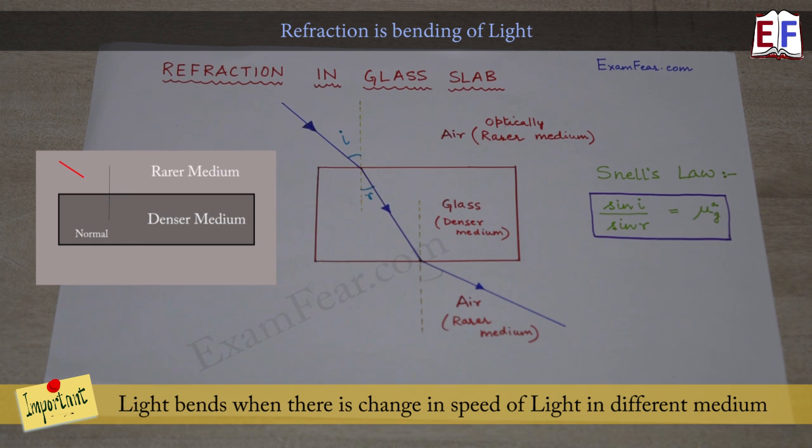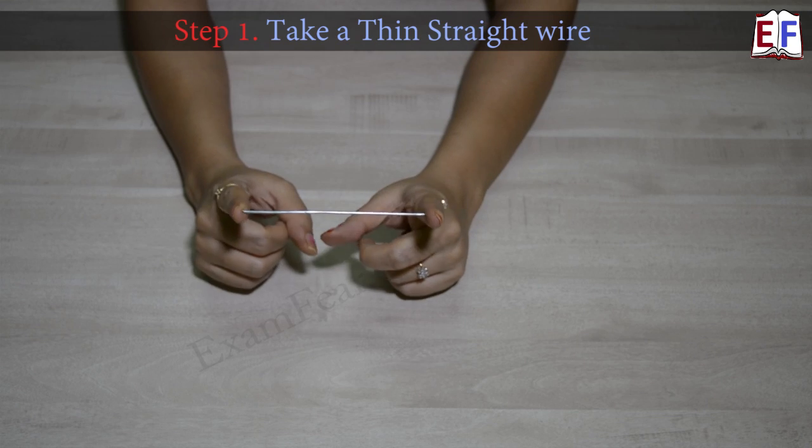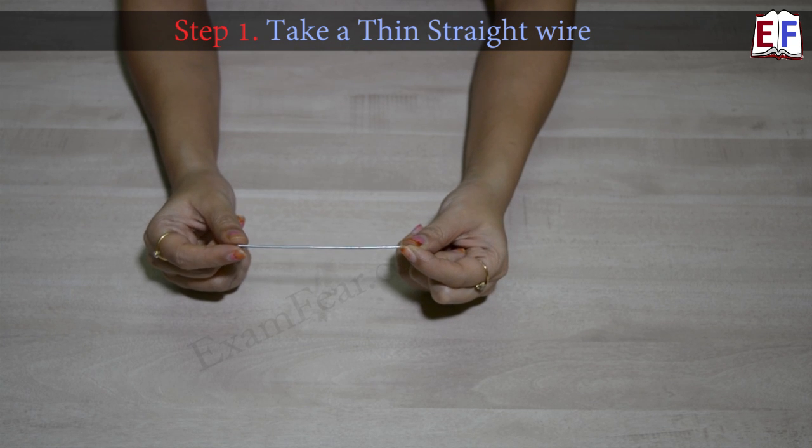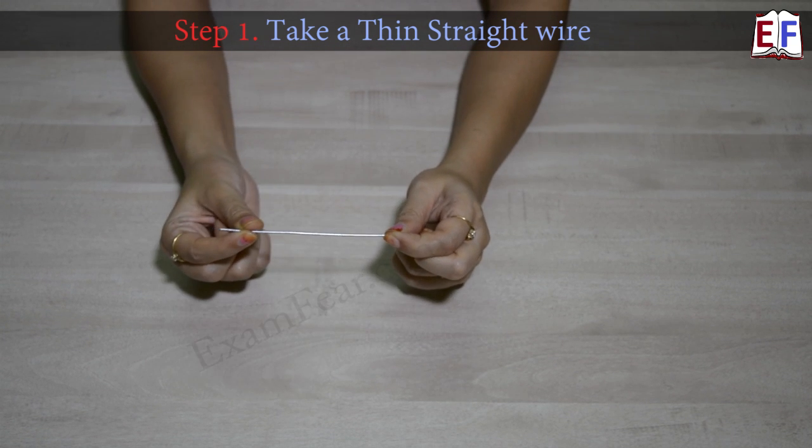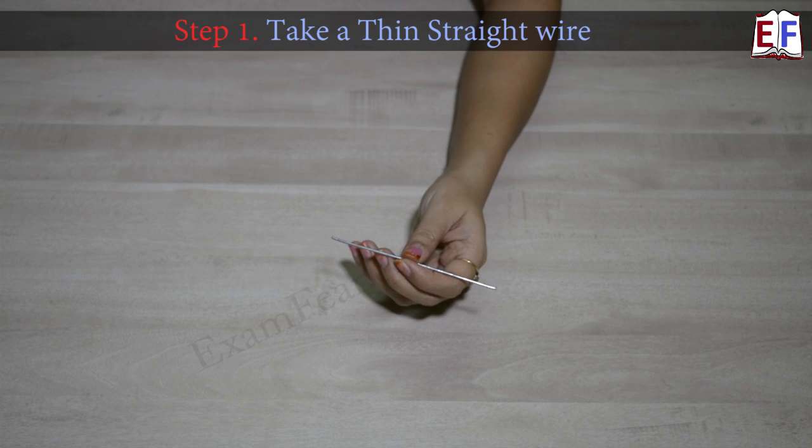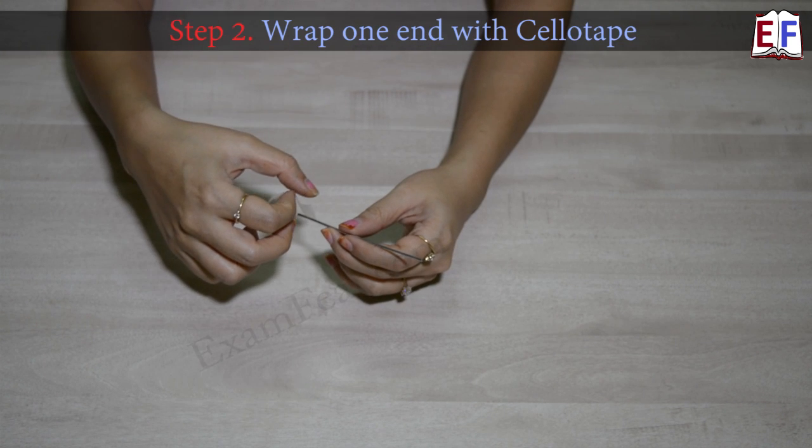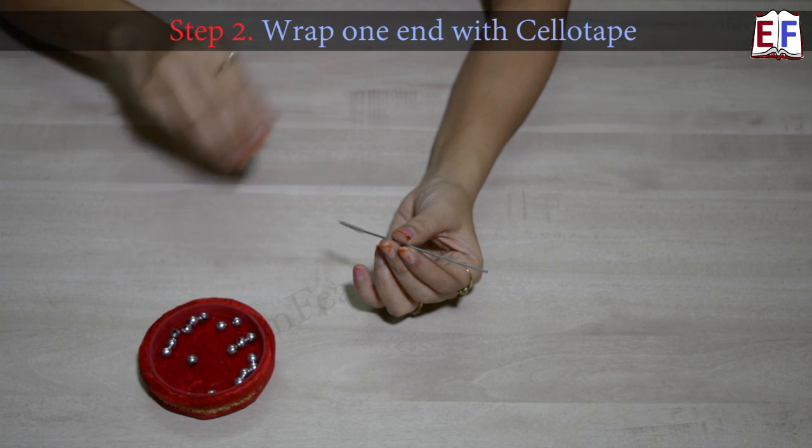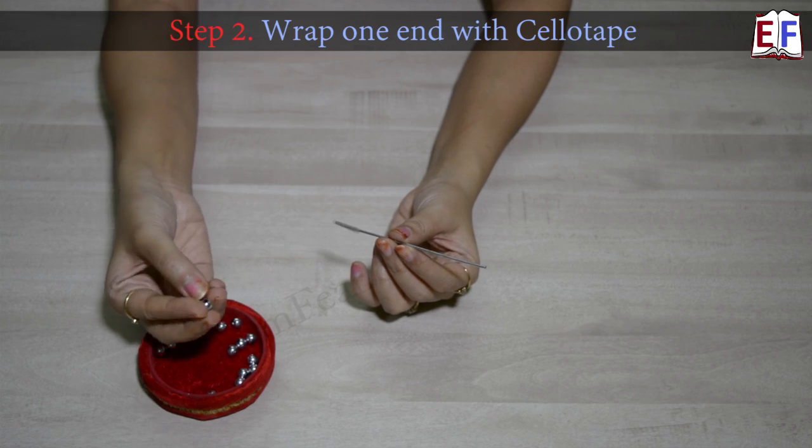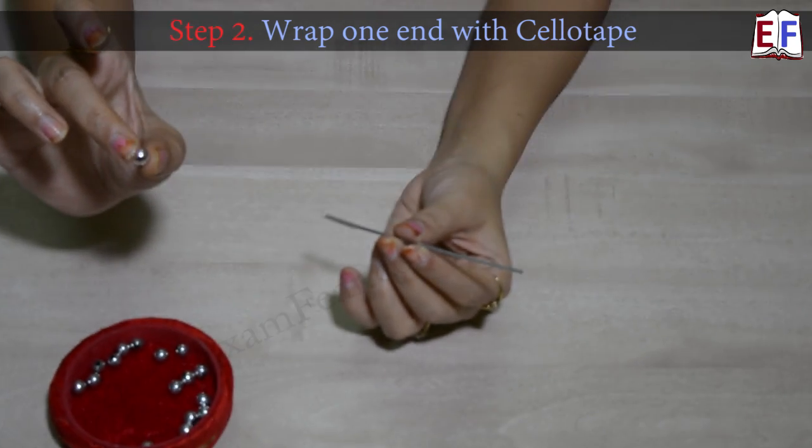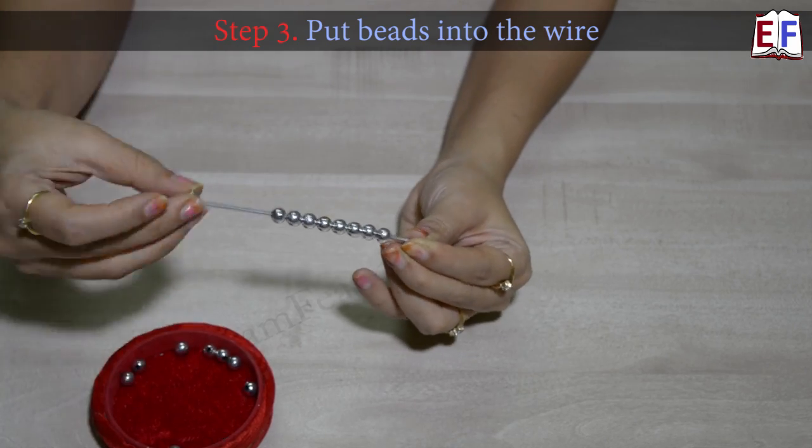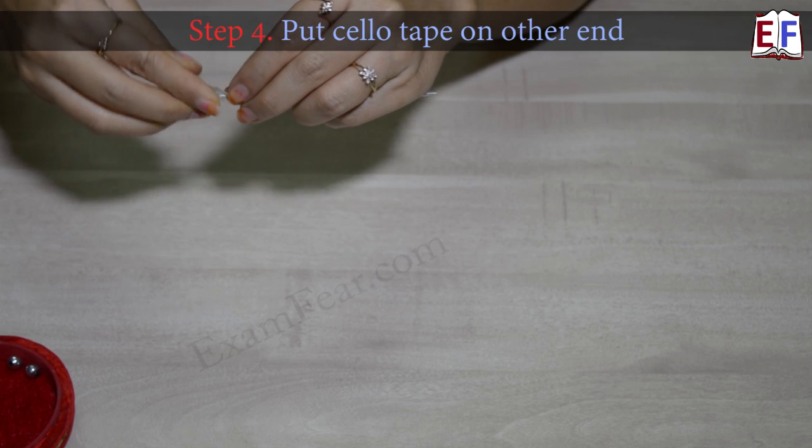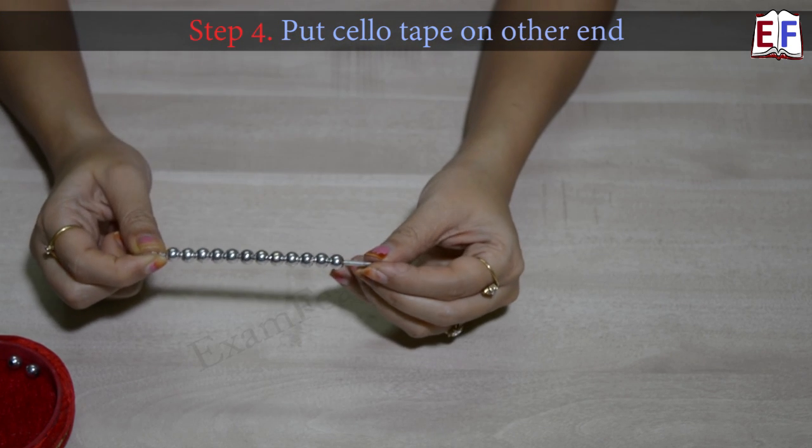Now would you be interested to see how exactly light bends? Let us start with this thick wire. You can take a thick wire or even a very thin rod, just make sure that it is straight. The first thing that we do is we wrap one end of the wire with a cello tape. Now you take the spherical beads. These beads will have holes, and you start putting these beads into the wire.